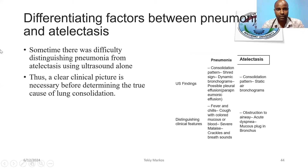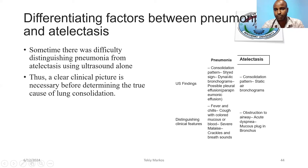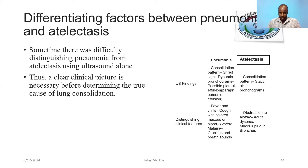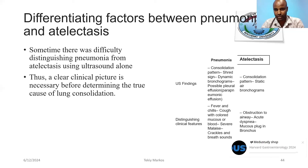Differentiating factors between pneumonia and atelectasis: sometimes it is difficult to distinguish pneumonia and atelectasis. A clear picture is necessary before determining lung consolidation. Ultrasound findings might be consolidation patterns, shred signs, dynamic air bronchograms, possibly pleural paraneumonic effusions suggestive of pneumonia, whereas static bronchograms are suggestive of atelectasis. Clinical conditions — fever, chills, cough with purulent mucus — are suggestive of pneumonia, and obstruction with air and dyspnea may be on the line of atelectasis.